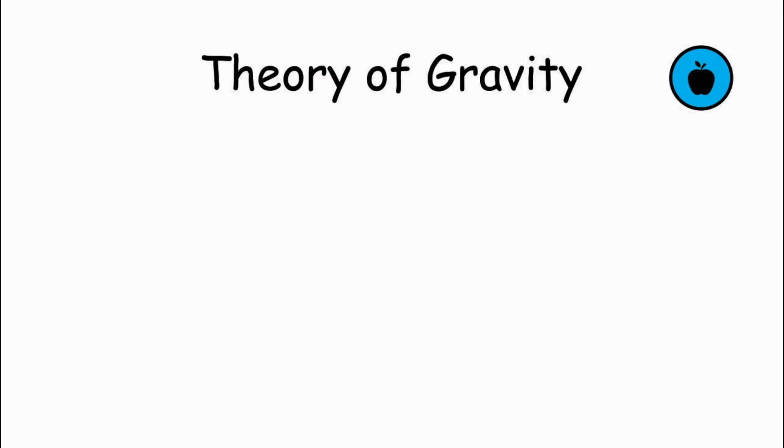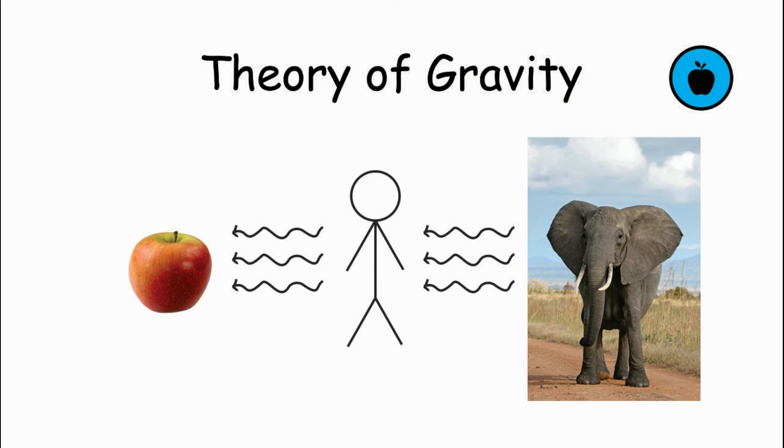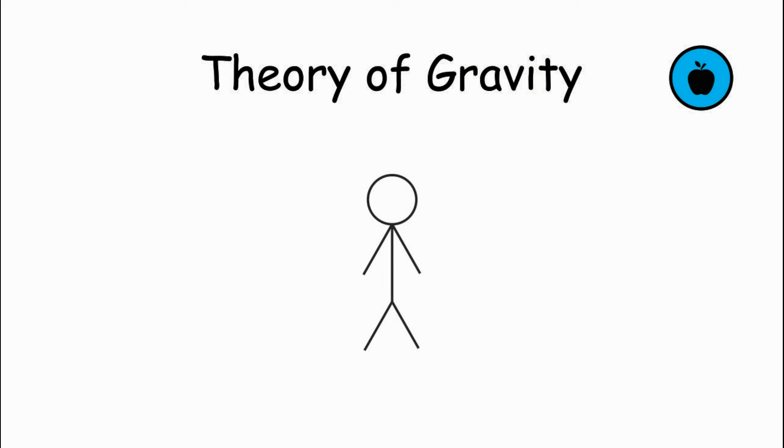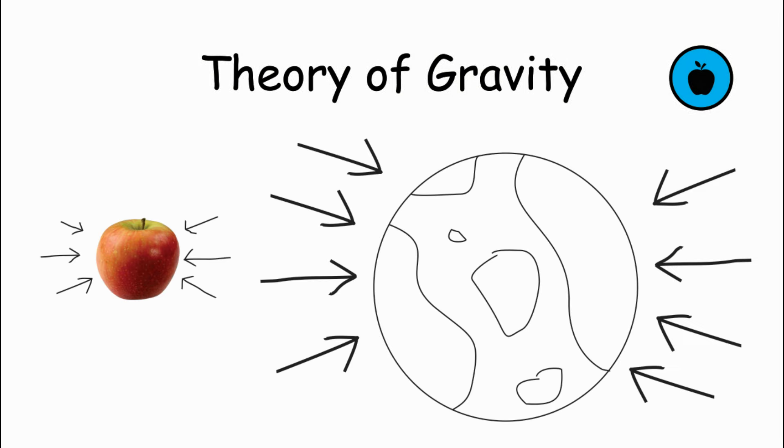Theory of Gravity: The theory of gravity simply explains that every object in the universe is attracted towards each other. Any object with mass contains a force of attraction in its center, and the bigger the mass is, the bigger the force will become.